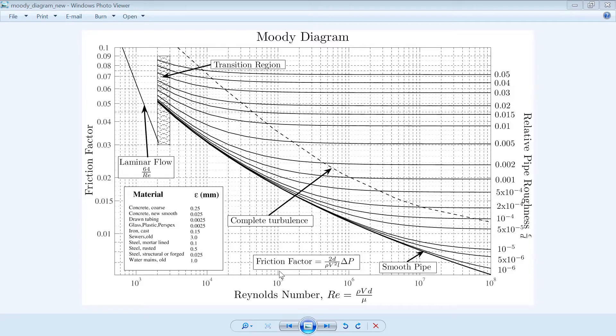If it's one hundred thousand, we follow this line straight up. Then we have to calculate the relative roughness, which is the roughness coefficient divided by the diameter of the pipe.